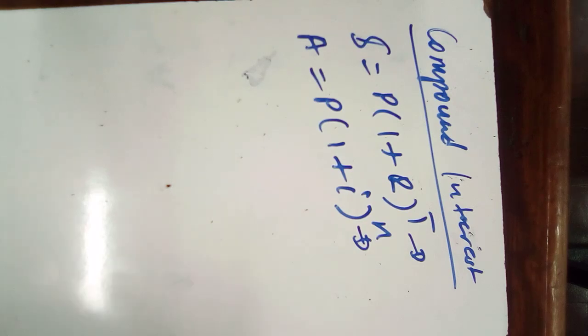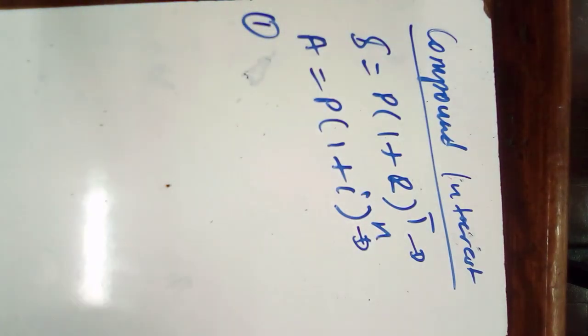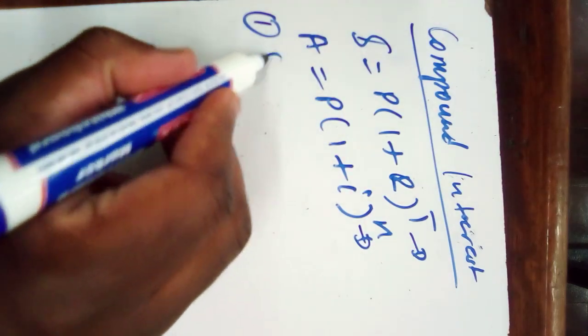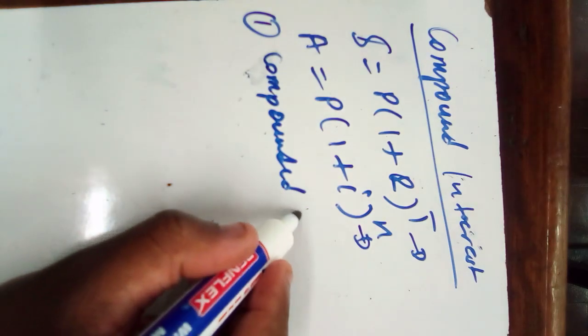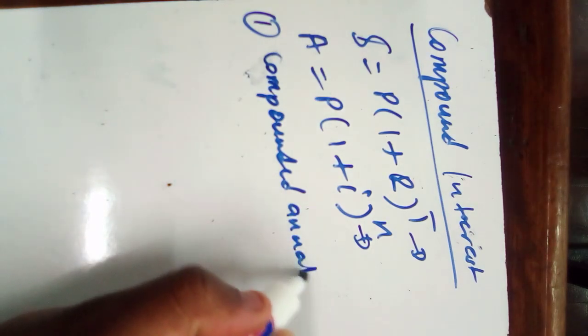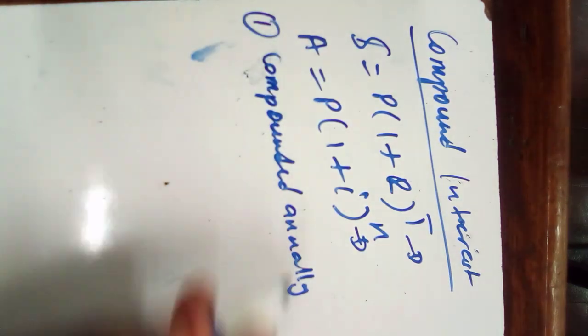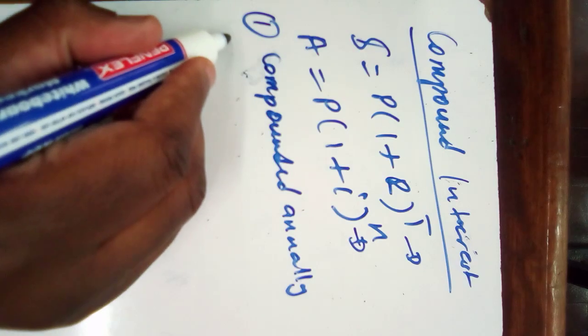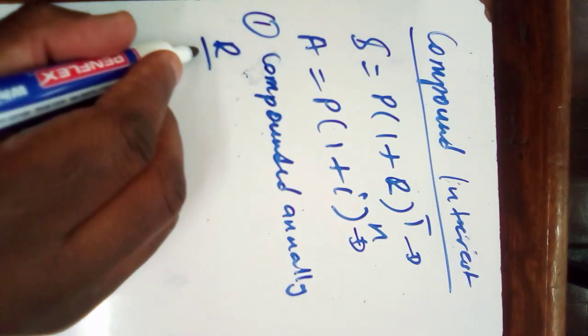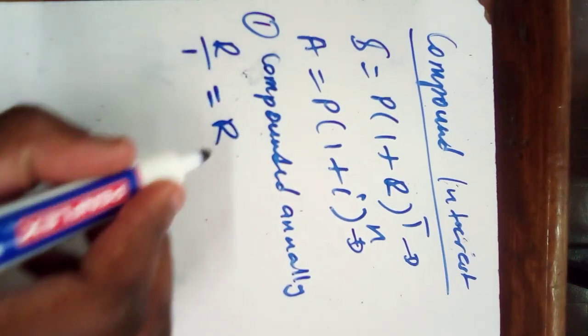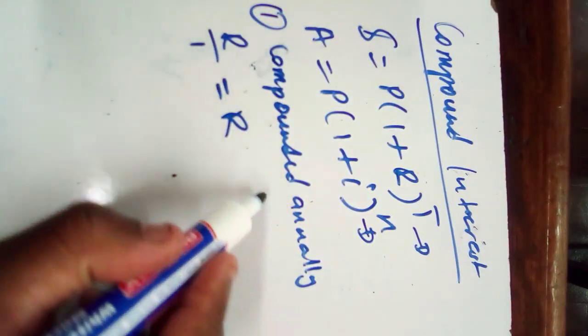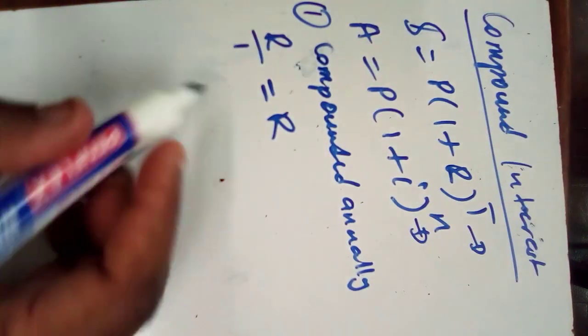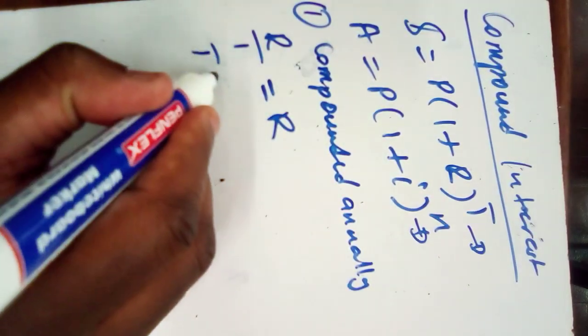So in compound interest, you have to know some certain things. The first thing, if the question says compounded annually, the first thing you have to do is divide R by one, which is gonna remain as R. But before you divide R, you remember you have to convert it to decimal by dividing by 100. Then your T you have to multiply it by one, which is gonna be T. That's when it's compounded annually.